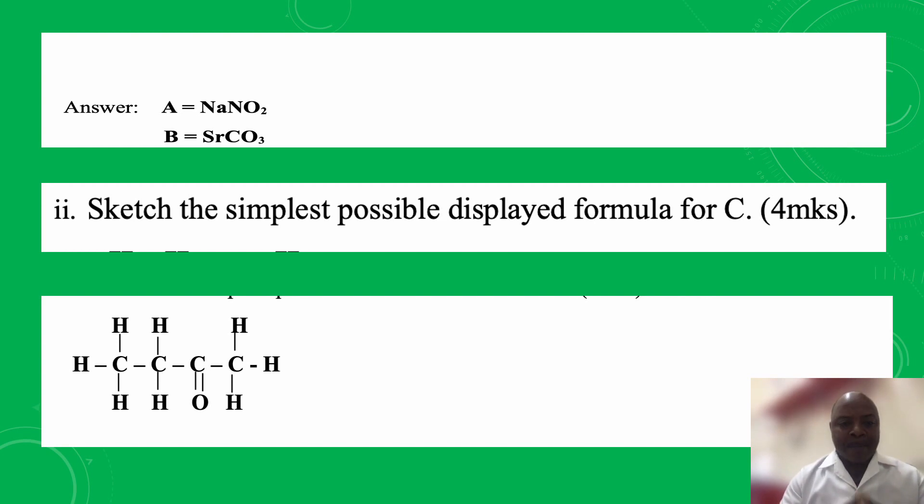That is the simplest formula you can give for a ketone. But if you want to give an example, you can give this one, which is butan-2-one. This is an example of a ketone. So thank you for that.